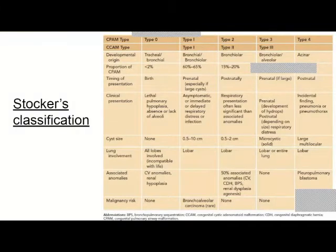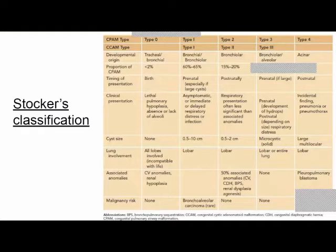The most commonly followed classification is Stocker's classification, dividing CPAM into five types: type 0 to type 4. The types correspond to the developmental stage affected. Type 0 is tracheal or bronchial in origin, occurring at the beginning of the pseudoglandular stage. These are generally lethal, account for less than 2% of cases, and all lobes of the lung are involved.